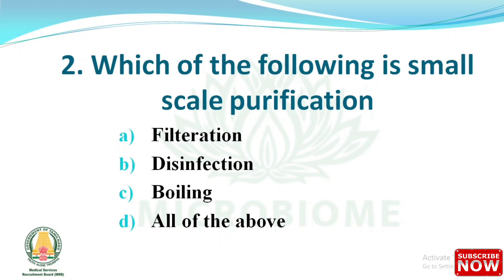Question 2: Which of the following is small-scale purification? Options: filtration, disinfection, boiling, and all of the above. The right answer is option D - all of the above. In large-scale purification, there are five steps: water intake, coagulation, filtration, disinfection, and distribution. Alum is used for coagulation. Filtration removes microorganisms up to 95%, and residual chlorine is 0.2 ppm.